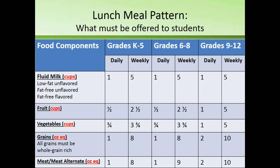For meat-meat alternate, you must offer one ounce equivalent every single day for grades K through 8, but there are also weekly minimums. For K through 5, it's eight ounce equivalents over the course of the week. For grades 6 through 8, it's nine ounce equivalents over the course of the week. At high school, you must offer two ounce equivalents of meat-meat alternate every single day, and ten ounce equivalents over the course of the week.